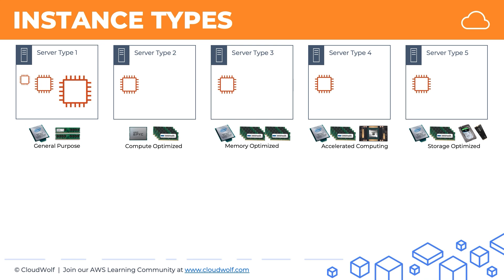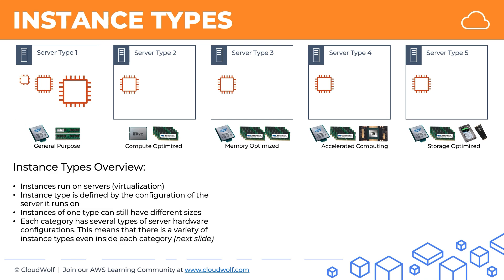So depending on your use case, you'll choose a different instance type. Of course, this is a very crude representation — there are indeed five main types, but within each type there's a whole range of subtypes, and they can vary in different sizes. The key things to remember are: your instance type will depend on what kind of server it's running on, your instance can vary in size within that type, and within each type there are lots of different subtypes.